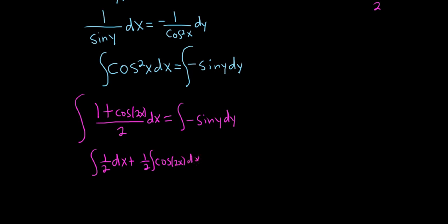I just basically broke it up. It's 1 over 2 and then cos(2x) over 2, but I pulled out the 1/2. Then here we have negative sin(y)dy.